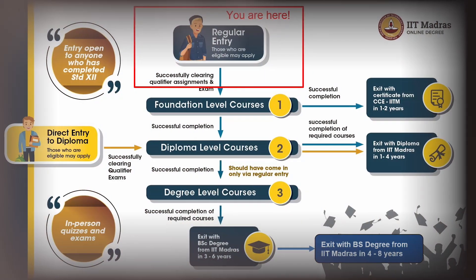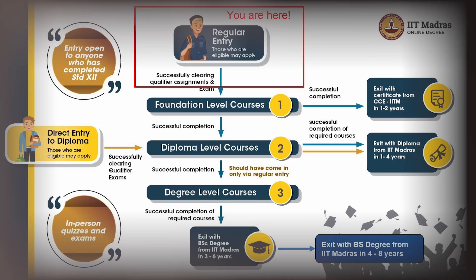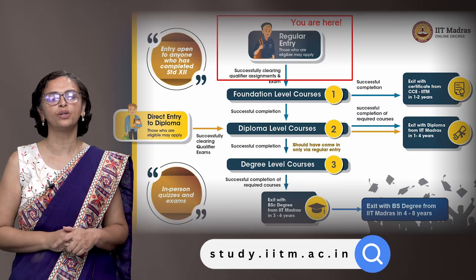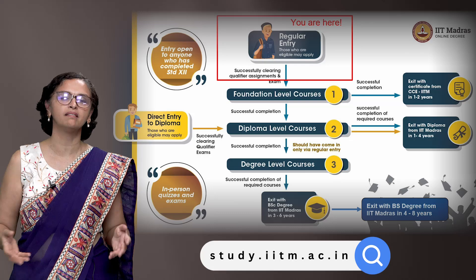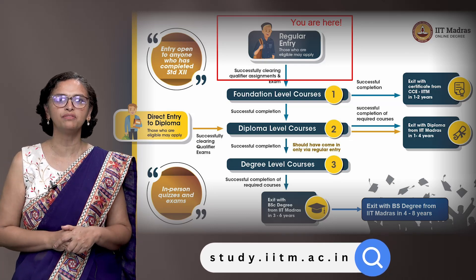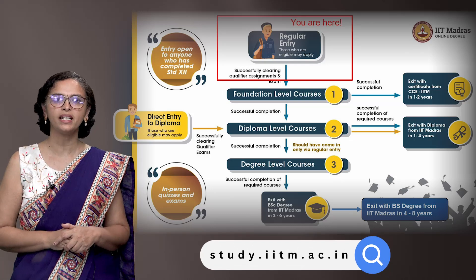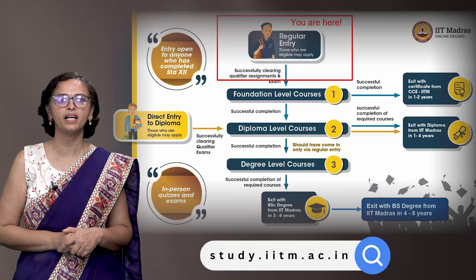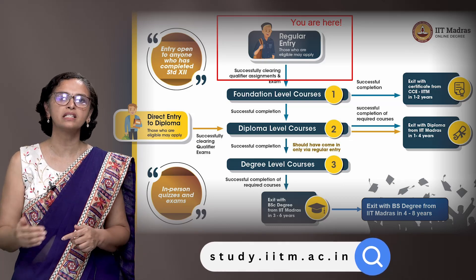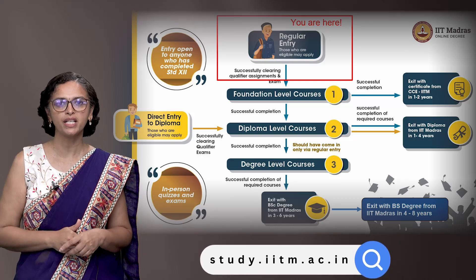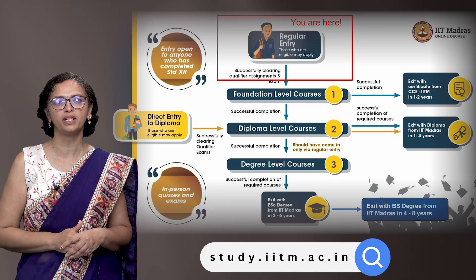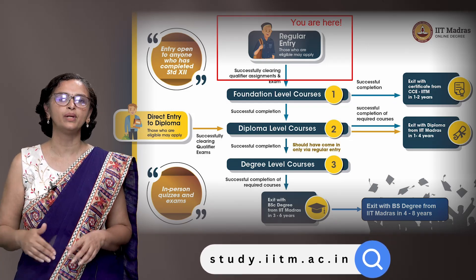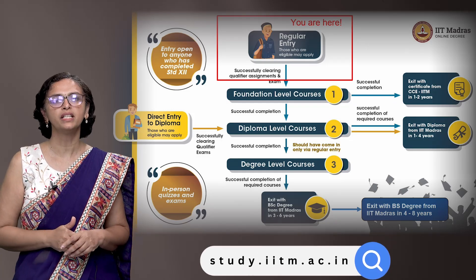This slide gives an overview of the entire BS program. You can see that you are at the entry level, marked here in red color. This is the regular entry — you come in through the qualifier process and once you pass the qualifier, you come into the foundation level of the program, then proceed to the diploma level, the degree level, and exit with the BS degree.